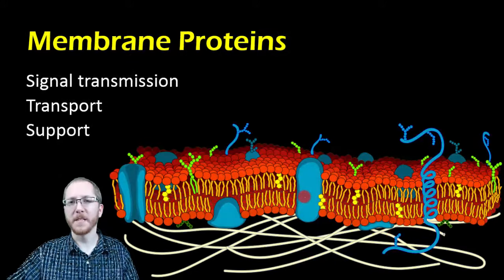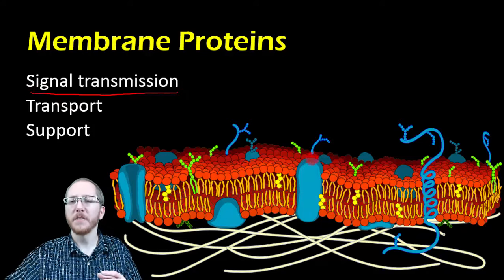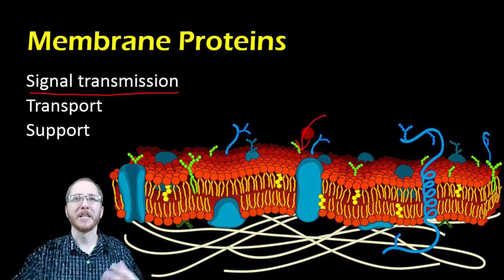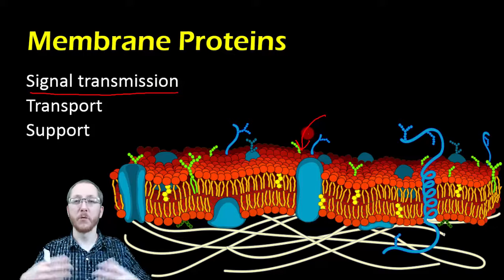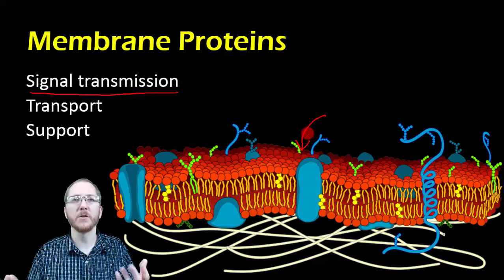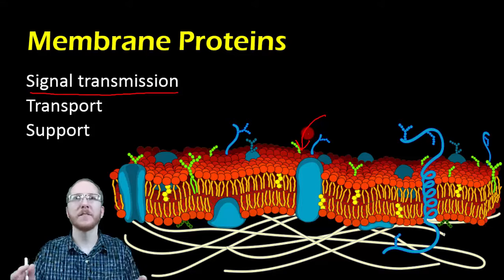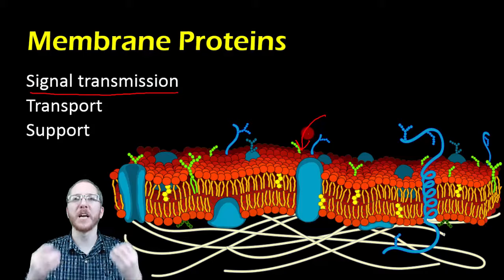Membrane proteins do a bunch of stuff, just like all proteins tend to. One function is signal transmission — many of these proteins function as receptors. A molecule like a hormone can bind to it and trigger a change that gets sent through the cell and causes some response, such as growth or activating certain genes — for example, producing melanin when exposed to sunlight, causing a tan. A key function is to act as a receptor to receive signals and cause cellular change, maintaining homeostasis and development.